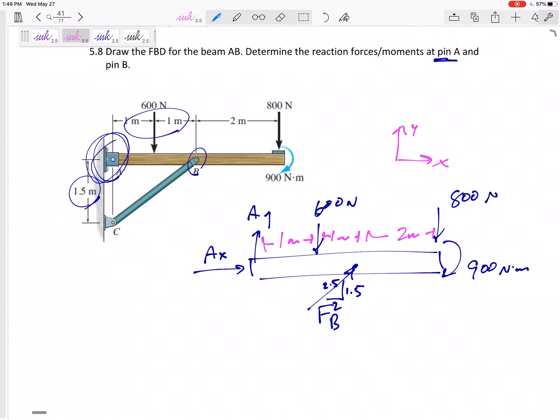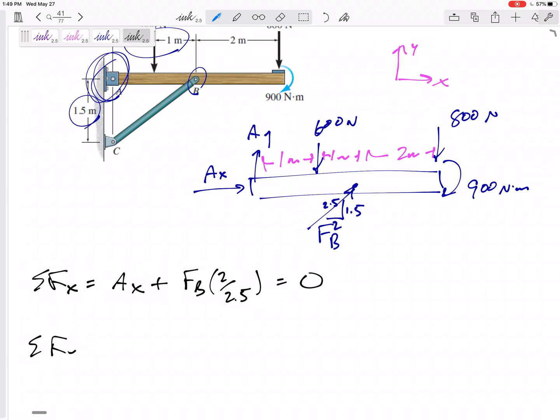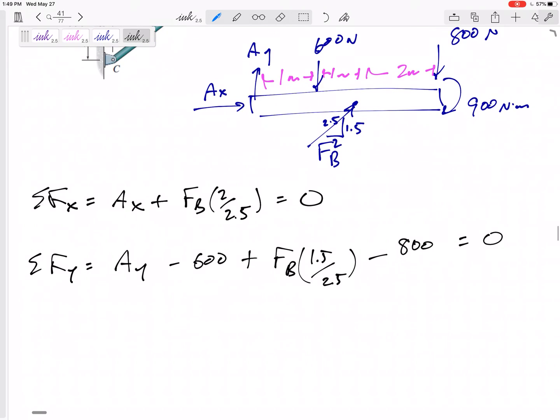Let's stick with an XY axis. So let's sum the forces in X. AX and the 2 over 2.5 component of FB equals 0. Jump to FY. Summing the forces in Y. AY minus 600, FB the 1.5 over 2.5 component minus 800 equals 0. Still can't solve.